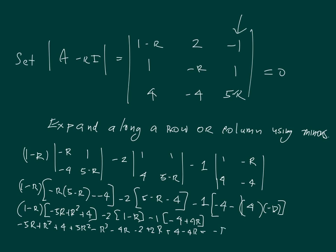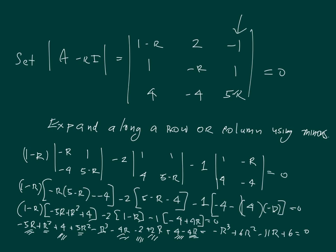Continuing the distribution gives minus 2 plus 2r, and plus 4 minus 4r. Collecting all terms, setting equal to 0: we have minus r cubed. The r squared terms are r squared and 5r squared, giving plus 6r squared. The r terms are minus 5r, minus 4r, plus 2r, and minus 4r, which sum to minus 11r. The constant terms are plus 4, plus 4, and minus 2, giving plus 6. So the characteristic polynomial is minus r cubed plus 6r squared minus 11r plus 6 equals 0.